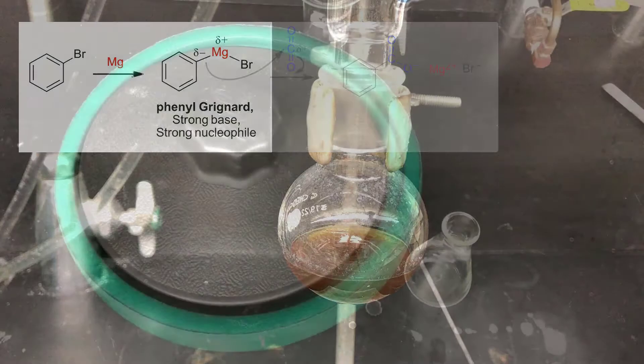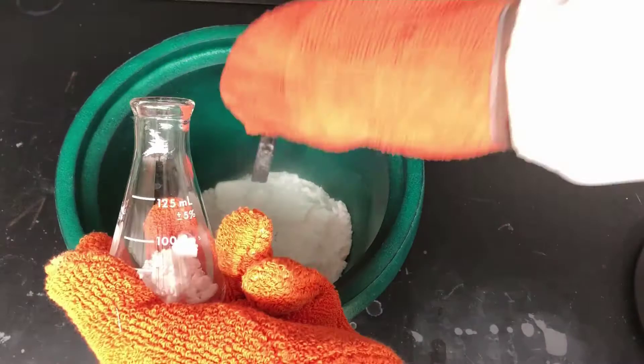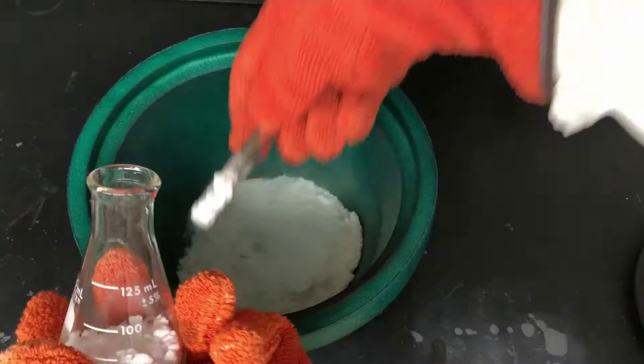This bucket contains solid CO2, or dry ice, which is very cold, so I'm wearing thermal gloves here to protect my hands. I'm taking a 125 milliliter Erlenmeyer flask and filling it about a quarter full with dry ice. Because it's cold, dry ice has a tendency to accumulate frost, so it's a good idea to dispense it just before you're going to use it.